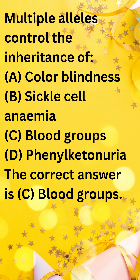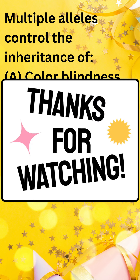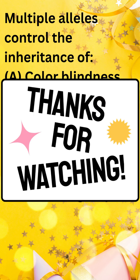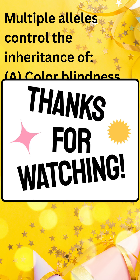Phenylketonuria is a metabolic disorder caused by a mutation in a single gene with two alleles, leading to normal metabolism or phenylalanine buildup. Therefore, only blood groups are controlled by multiple alleles.